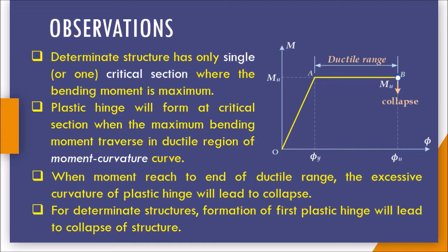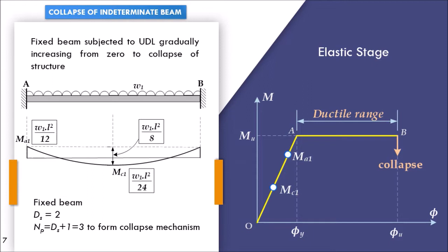Now the same experiment is conducted on an indeterminate structure. A fixed beam is considered, carrying UDL. For a fixed beam, the degree of static indeterminacy is 2, so the number of plastic hinges required for collapse is DS+1 = 3. Three plastic hinges must form for collapse. The standard elastic fixed end moments are MA = MB = WL²/12 and midspan moment is WL²/24. There are multiple critical sections: the support sections where bending moment is highest, and the span section with WL²/24.